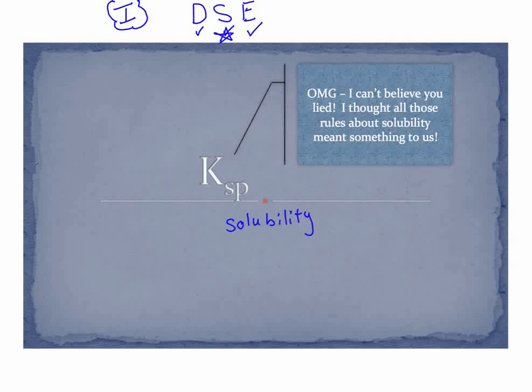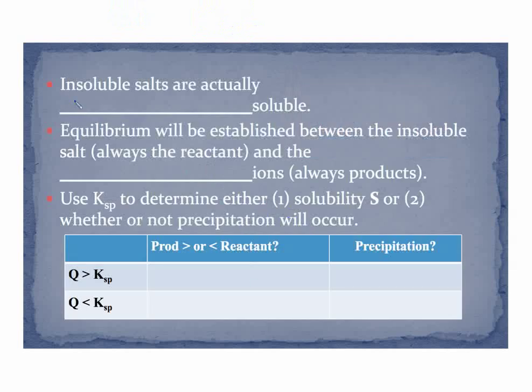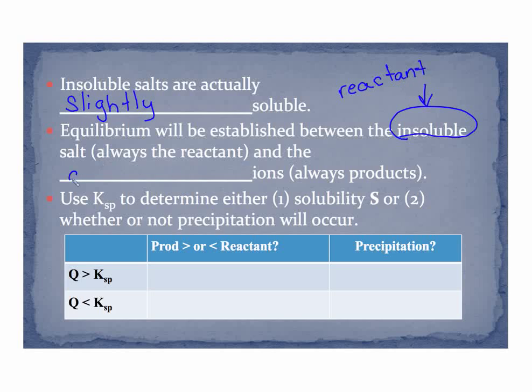So let's jump right in. What we find is that insoluble salts are actually slightly soluble, and what we'll see is an equilibrium will be set up. We're going to have the insoluble salt—the insoluble salt will always be our reactant of our equilibrium—and we're going to set that up as our aqueous ions. We're going to dissolve it.